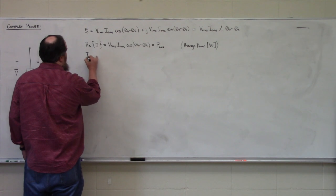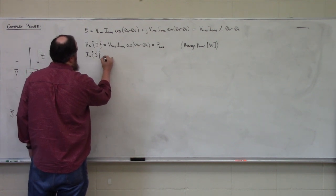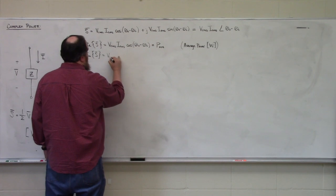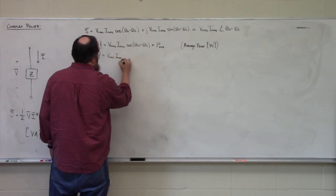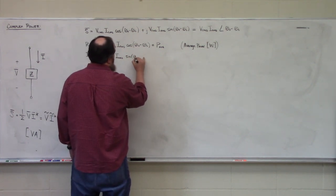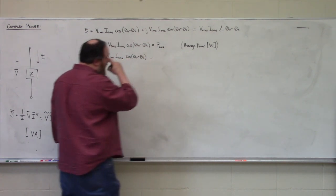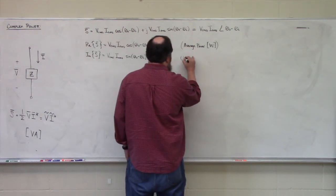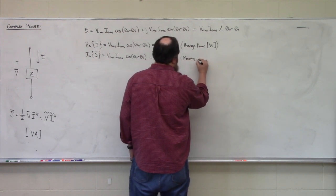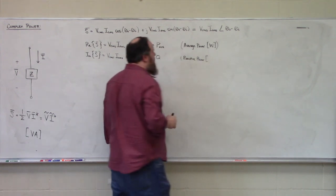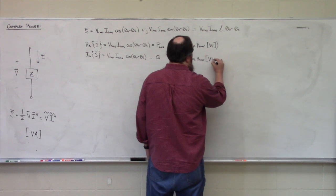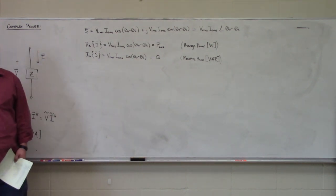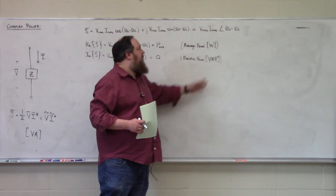The imaginary portion of complex power S is Vrms·Irms·sin(θV − θI), called Q, the reactive power. Reactive power has units of volt-amperes reactive, or VARs. Fundamentally a VAR is the same as a watt, but we use the unit VAR to differentiate reactive power from average power.